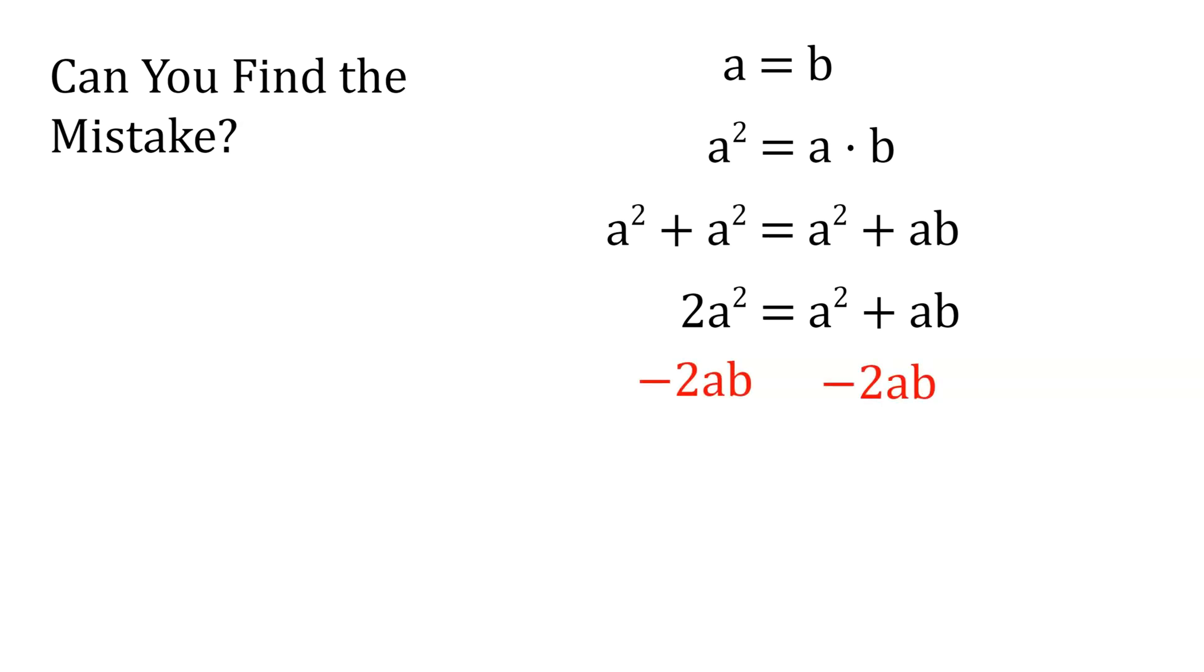Now we subtract 2ab from both sides, and we get 2a squared minus 2ab equals a squared minus ab. Now we factor out a common GCF of 2 from the left-hand side and a 1 from the right-hand side of the equation.